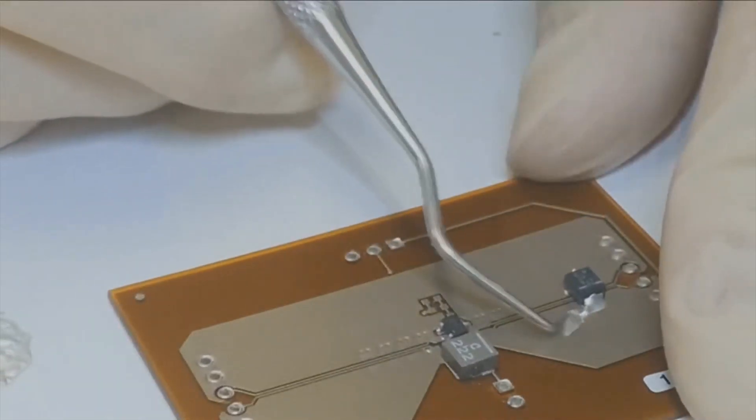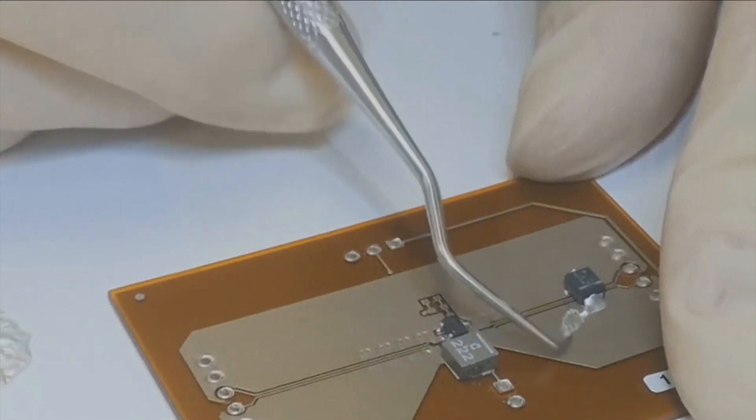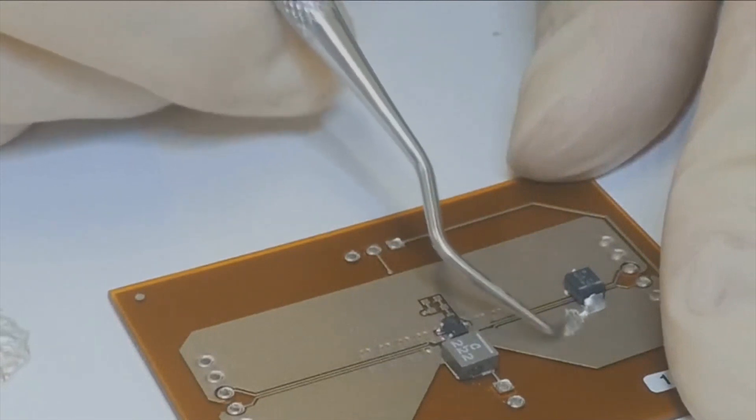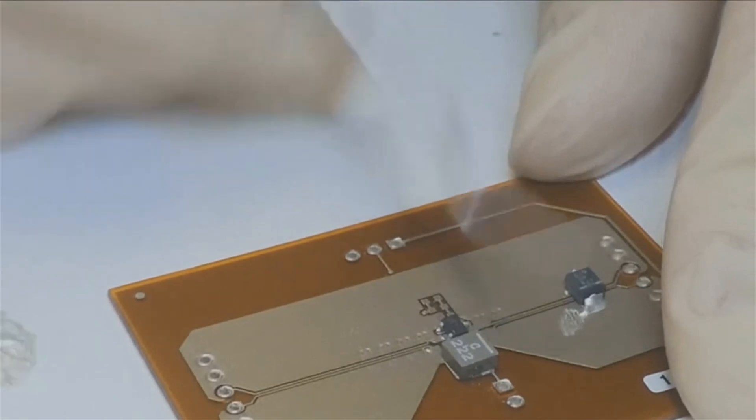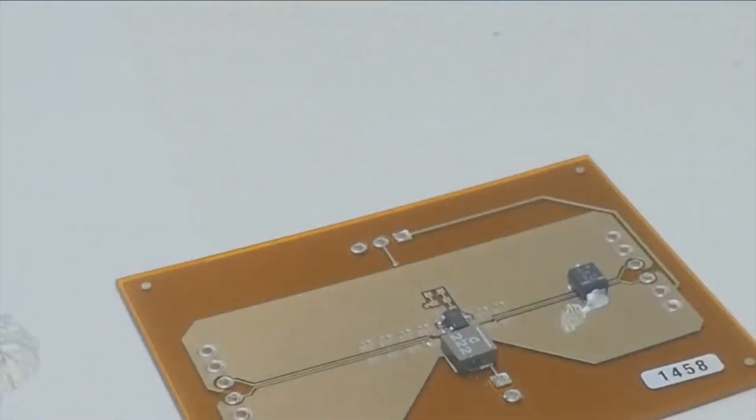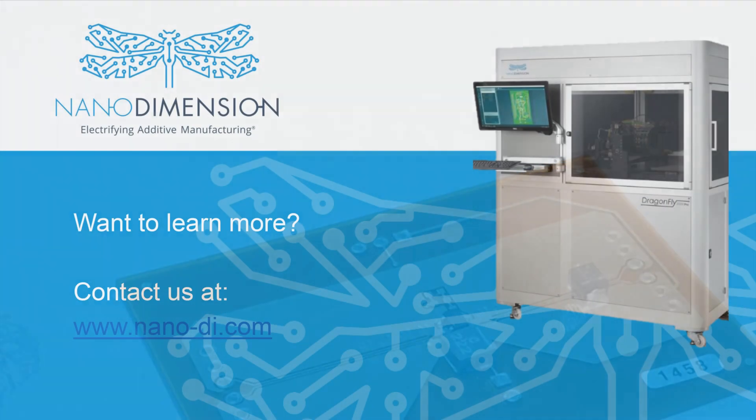In this video, we take a closer look at assembling PCBs printed on the Dragonfly additive manufacturing system using silver epoxy, one of the various ways to solder components on our boards. Please contact NanoDimension for more information.